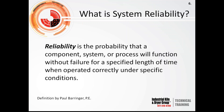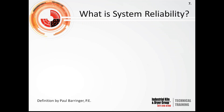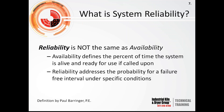Put properly, reliability is the probability that a component, system, or process will function without failure for a specified length of time when operated correctly under specific conditions. This definition is from Paul Berringer. It is not the same as availability. Availability defines the percent of time a system is alive and ready for use; reliability specifically addresses the probability for a failure-free interval of operations under specific conditions.